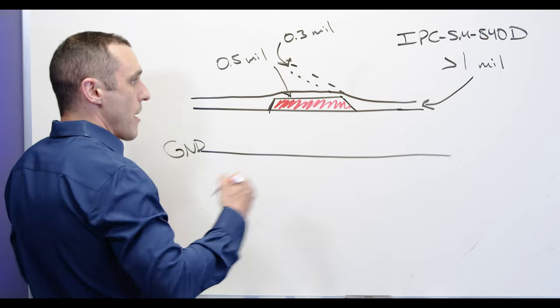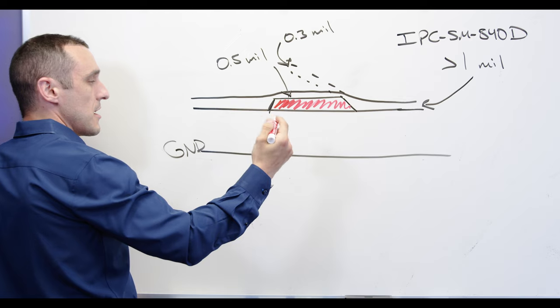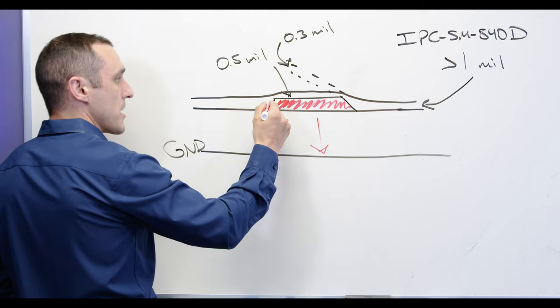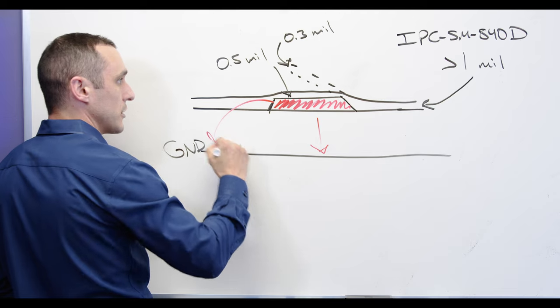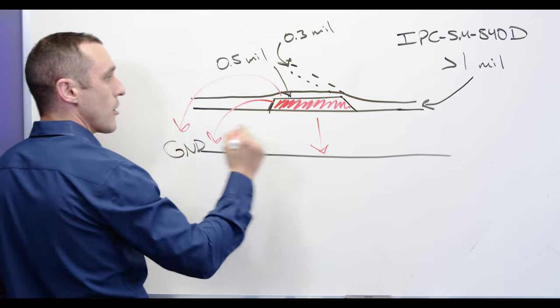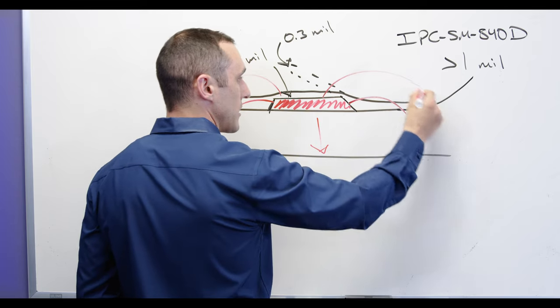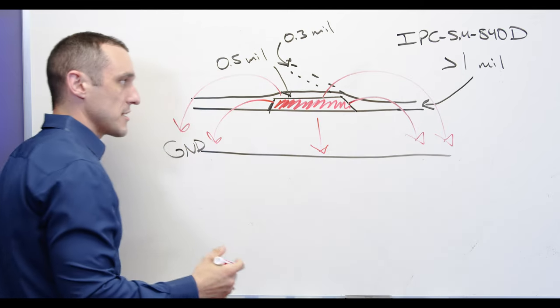Remember this thickness variation is important because the electromagnetic field exists everywhere around the trace. If I start drawing out field lines you can see here where all of the different field lines start to converge and terminate at the ground plane and they do pass through this solder mask everywhere.